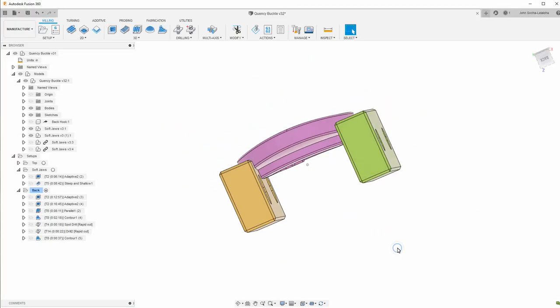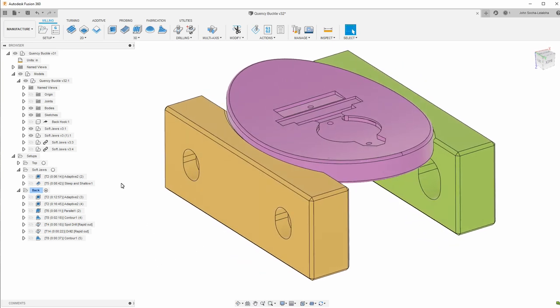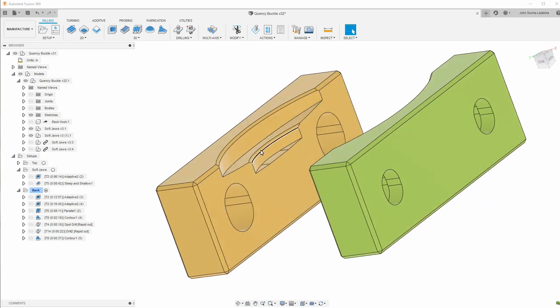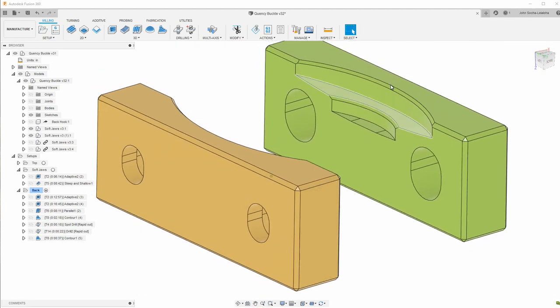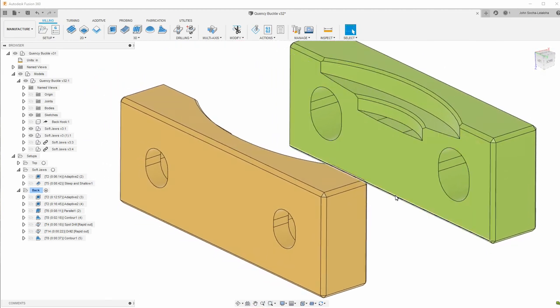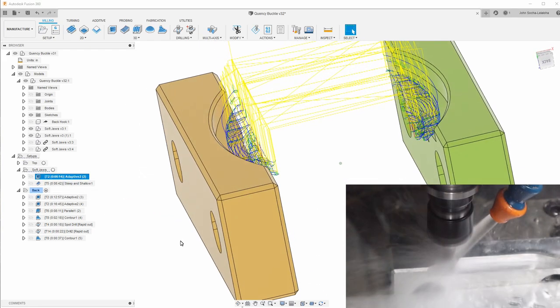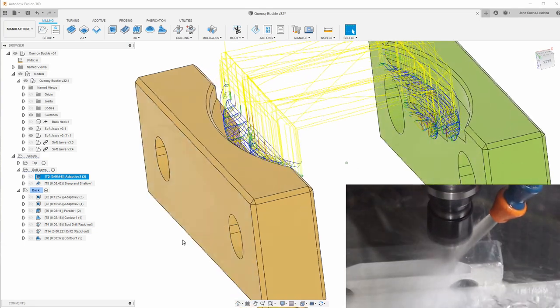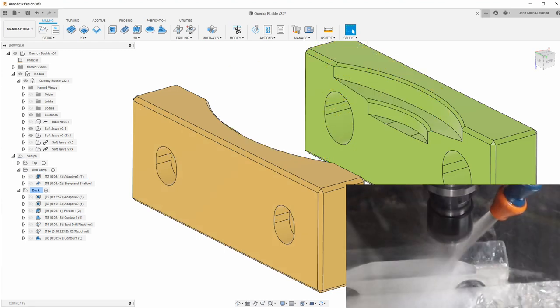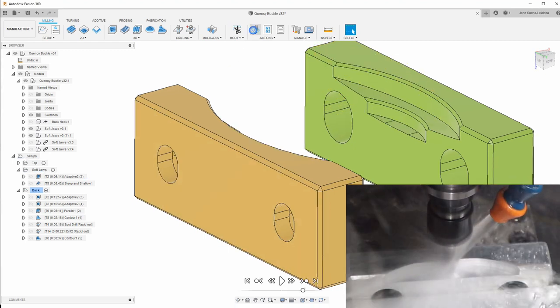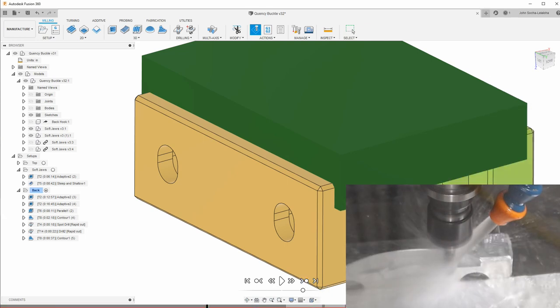I created a model that has the soft jaws in it as well as the model itself. I subtracted the part from the soft jaws and then added a couple chamfers here since there are some radiuses in the part itself. The first step is to cut the soft jaws and this is using an adaptive strategy that cuts out most of it but it leaves some stair steps.